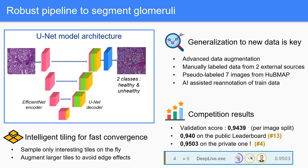We believe the main idea behind our pipeline is to force our models to generalize well into new data. To do so, we used advanced data augmentation as well as a lot of external data. We manually labeled data from two external sources and used weakly supervised learning for seven images from the HuBMAP platform.